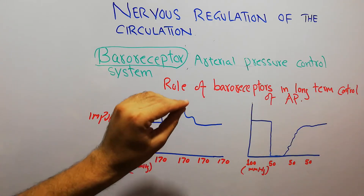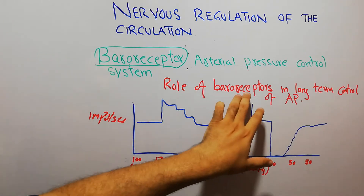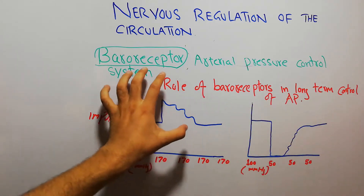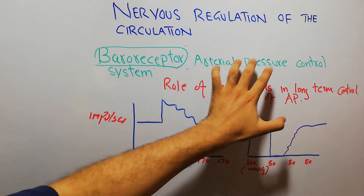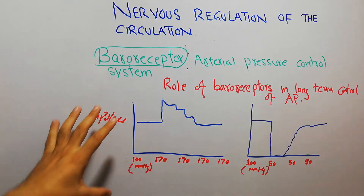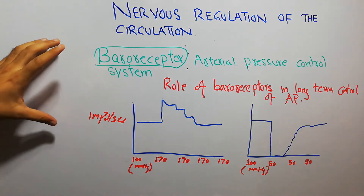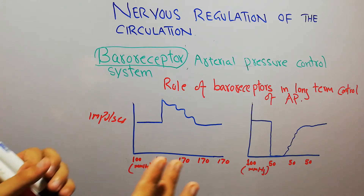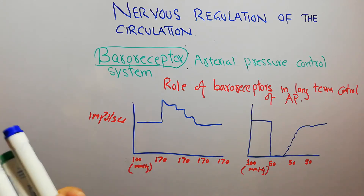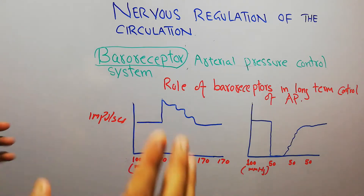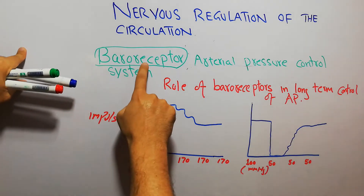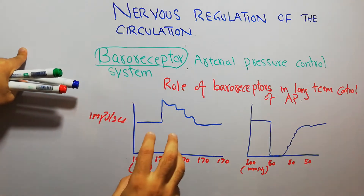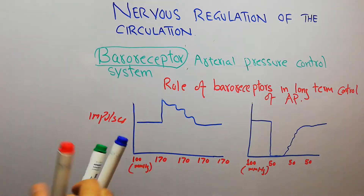Today in this lecture we are going to talk about the role of baroreceptors in long-term control of arterial pressure. We are discussing the baroreceptor arterial pressure control system in the nervous regulation of the circulation. We have discussed the buffer function of the baroreceptor, its physiologic anatomy, and that baroreceptors are present in the aortic arch and bifurcation of the carotid arteries, and they try to regulate the arterial pressure.